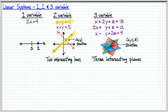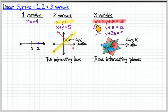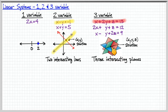As we go to three equations, a similar idea. Now we have this equation represented by a plane instead. All the points on the red plane satisfy this equation — there are an infinite number of points that satisfy it. We also have two other equations, also represented by planes. Where the three planes intersect, that's our single solution that would satisfy all three equations simultaneously.